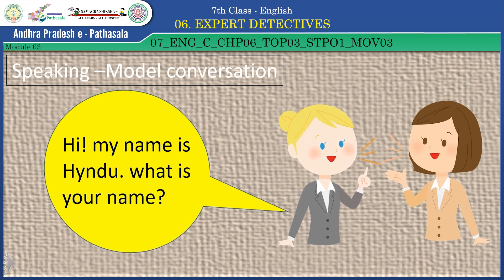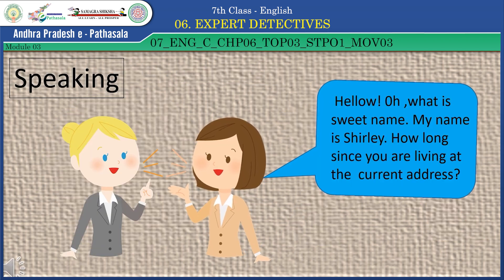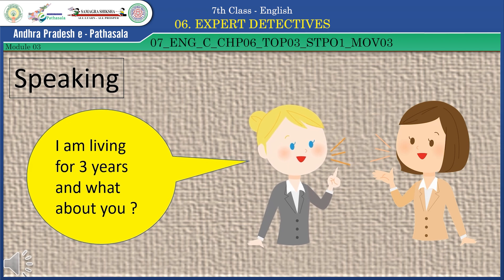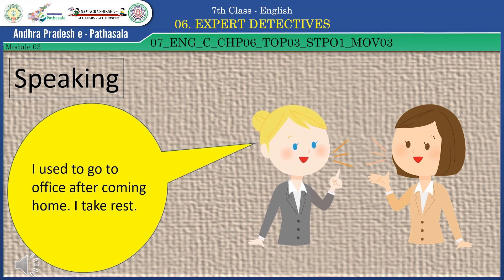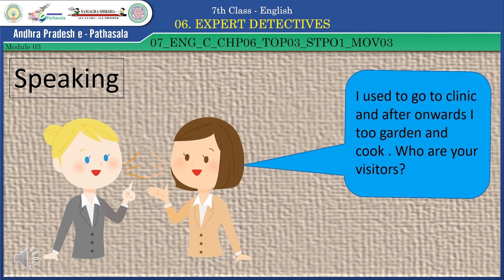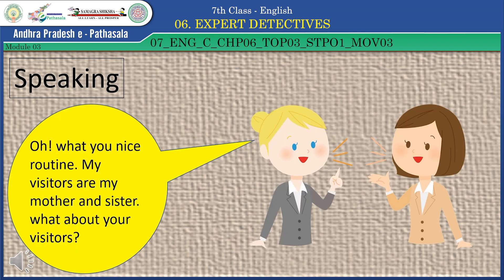Let's start a model conversation. Hi, my name is Hainu — what's your name? Hello, what a sweet name. My name is Shadli. How long have you been living at the current address? I have been living here for 3 years — and what about you? I have been living here for only 2 months. What is your daily routine? I go to office, and after coming home I take rest. I go to the clinic, and afterwards I do gardening and cook. Who are your visitors? What a nice routine. My visitors are my sister and my mom.